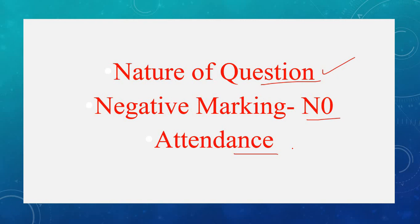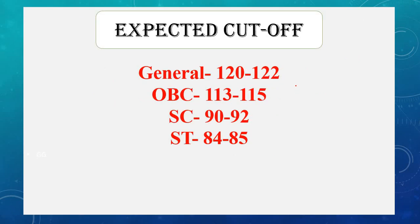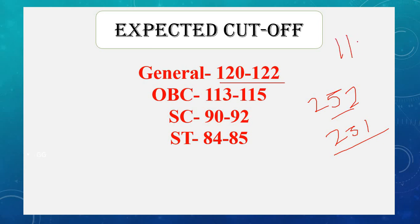Finally, let's discuss the expected cut-off. The general category cut-off is expected to be between 120 and 122. Last year there were 251-252 seats and the general cut-off was 111. Last year the paper was very tough. This time the cut-off for general category is expected between 120 and 122.